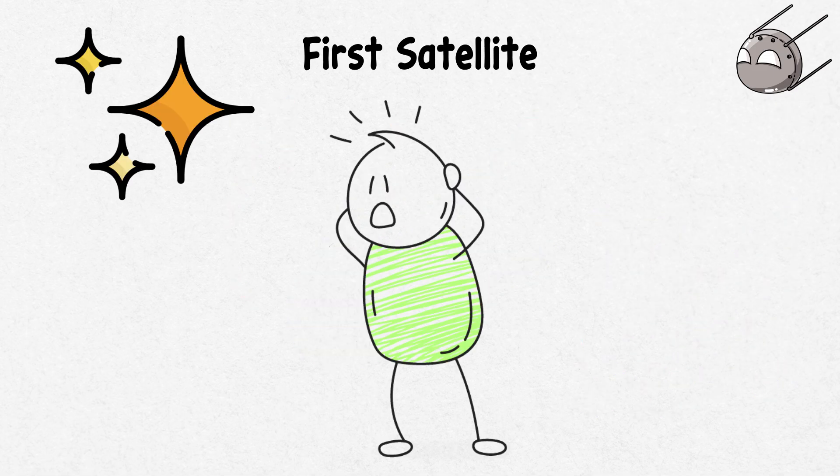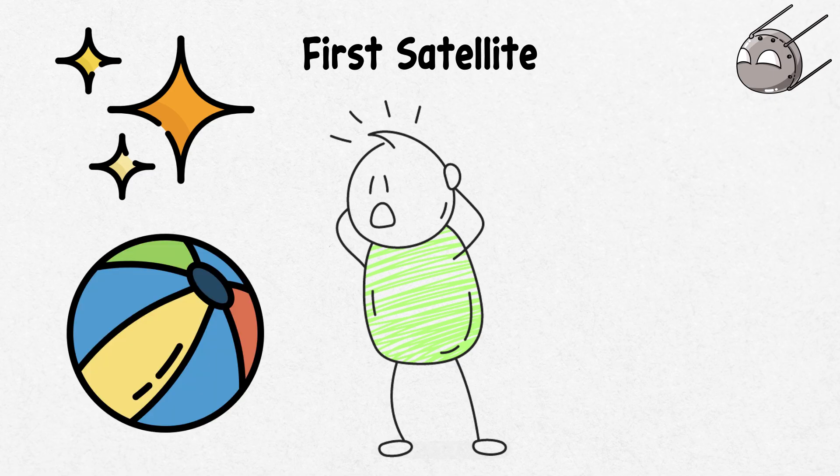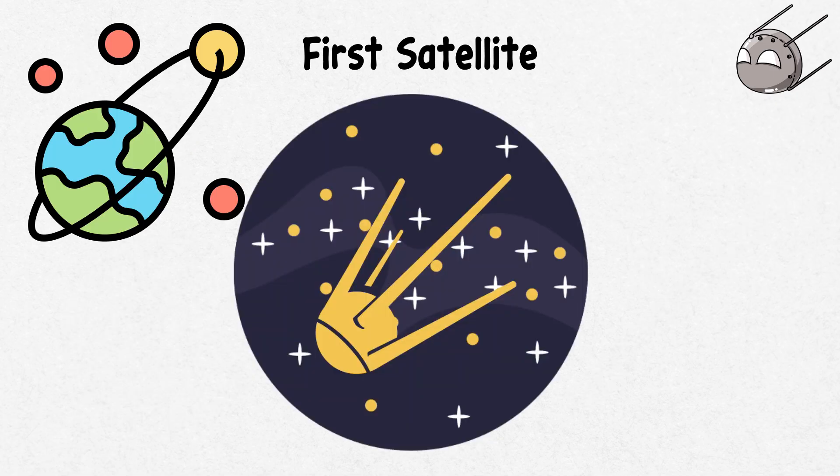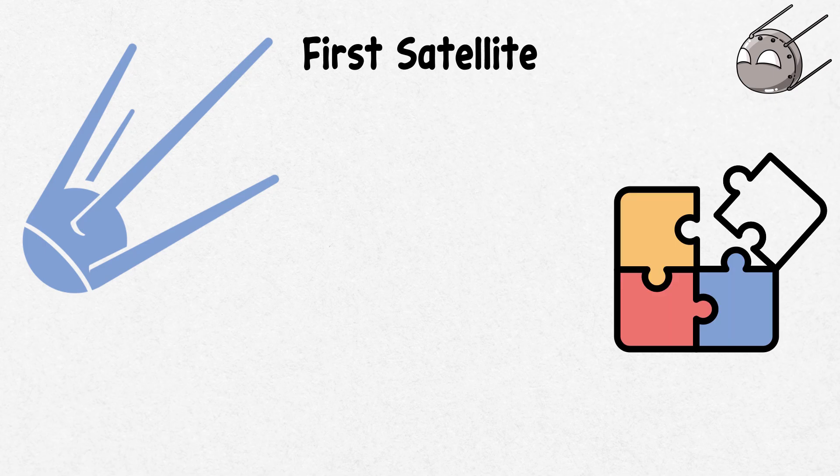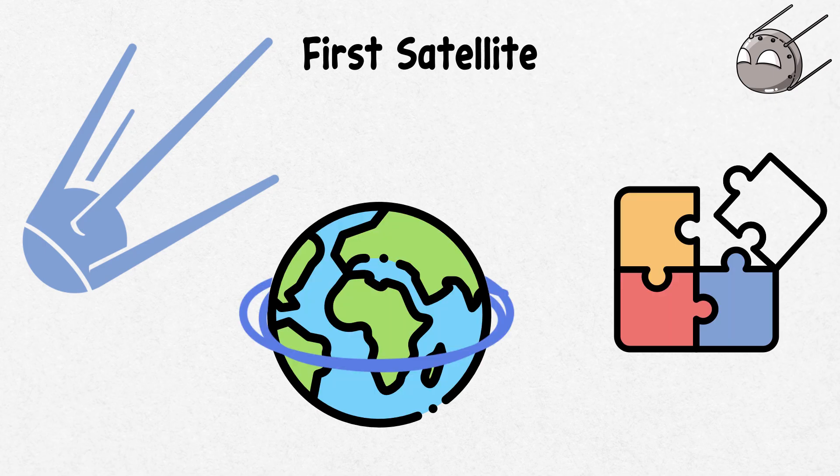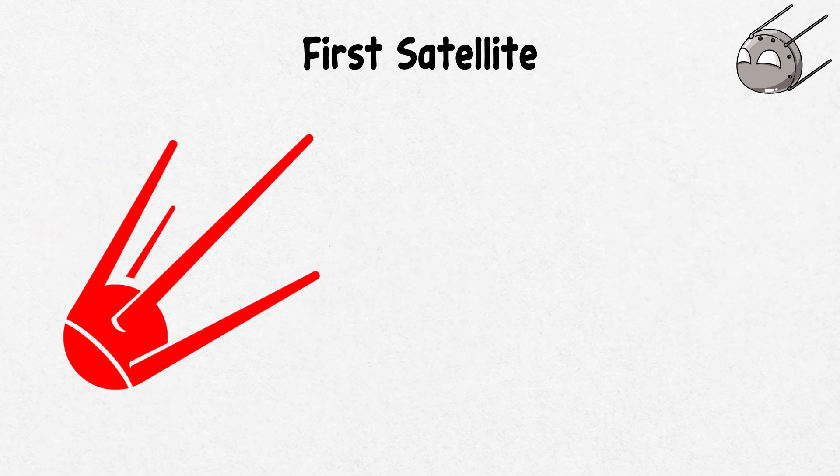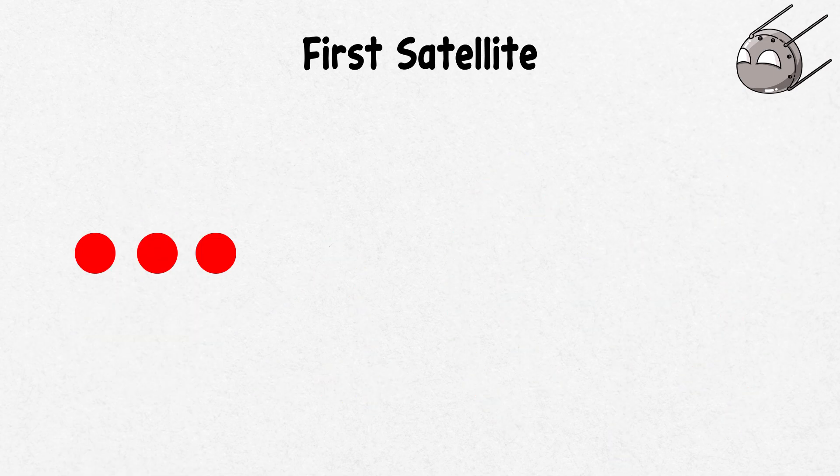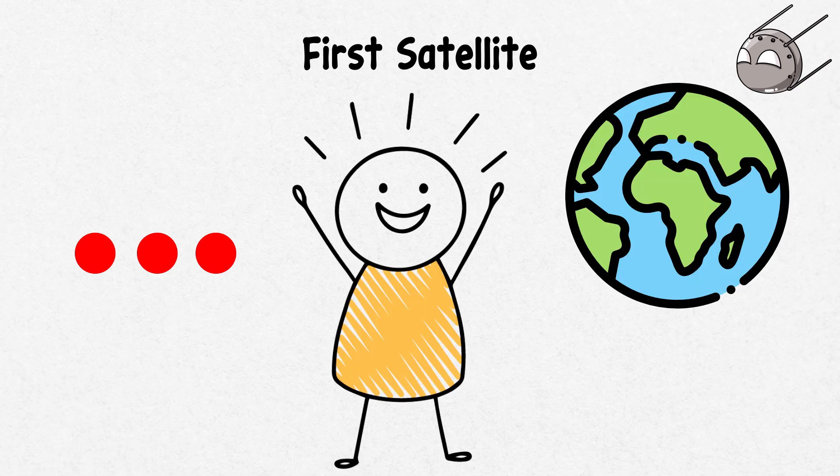Imagine the surprise. Something shiny about the size of a beach ball with four antennas suddenly appearing in the night sky, orbiting the Earth. Sputnik 1 was a game-changer, as it circled the globe every 96 minutes. It sent out a constant beep-beep-beep signal that anyone with a radio could pick up. This simple sound sparked amazement worldwide.